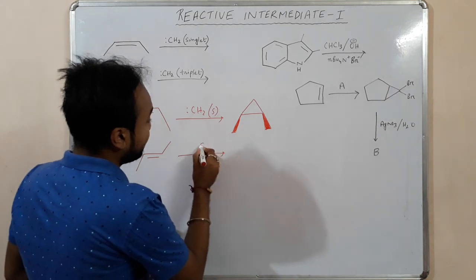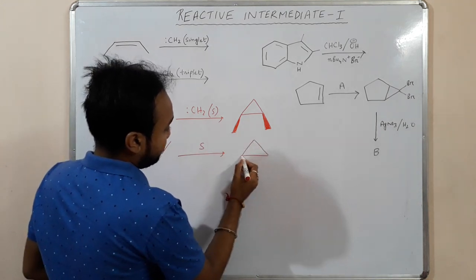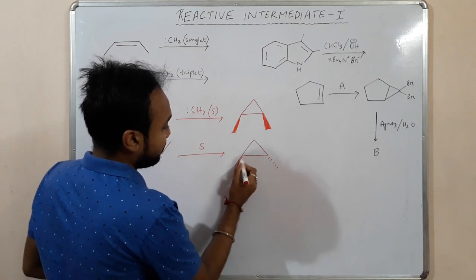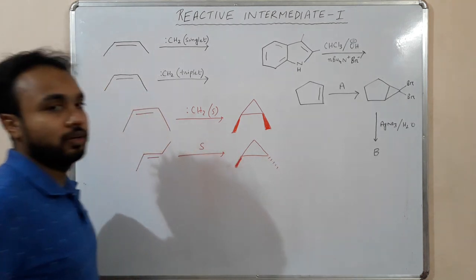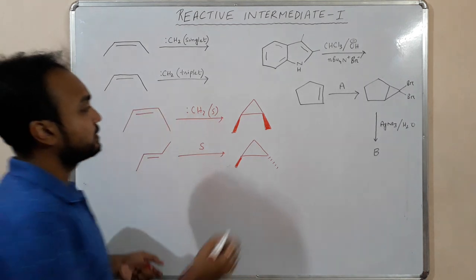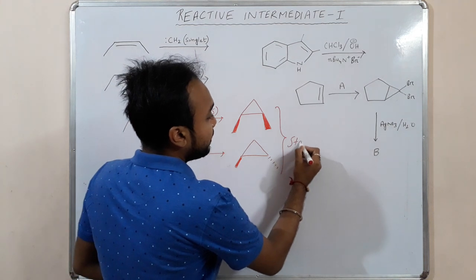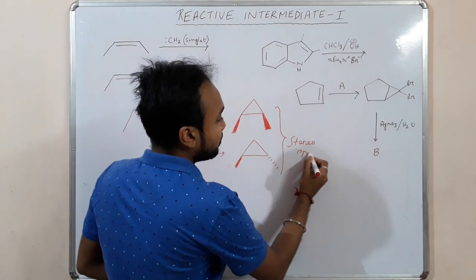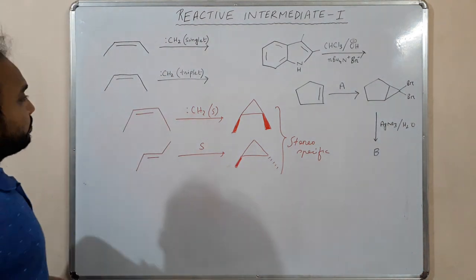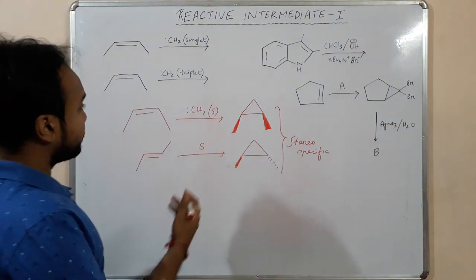If we start with a trans alkene, in the presence of singlet carbine we will get the trans form of the cyclopropane. So the addition of singlet carbine to an alkene is stereospecific — cis alkene gives cis product, trans alkene gives trans product.